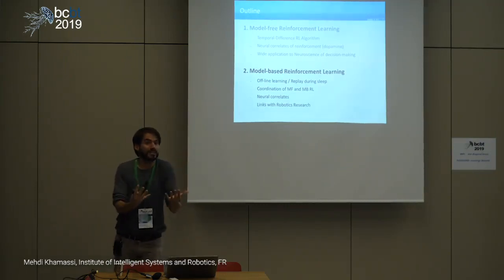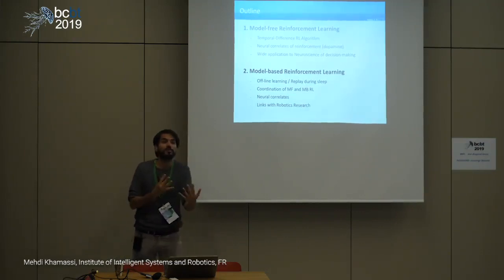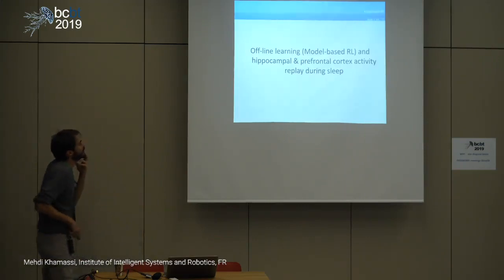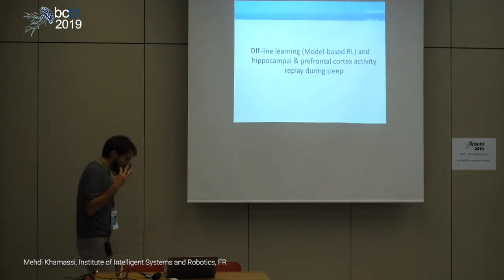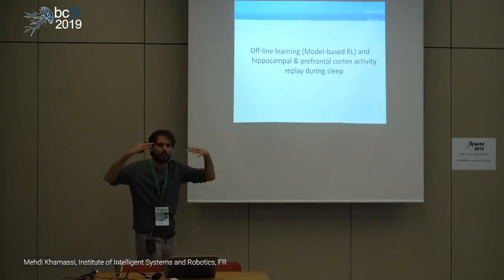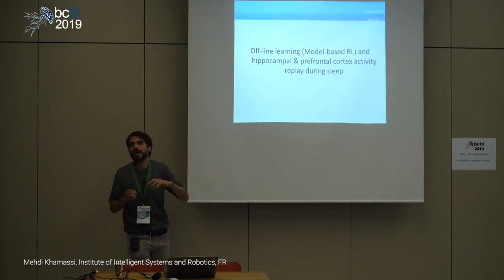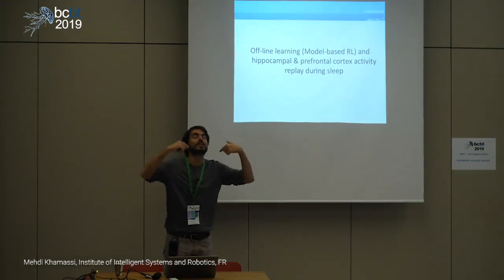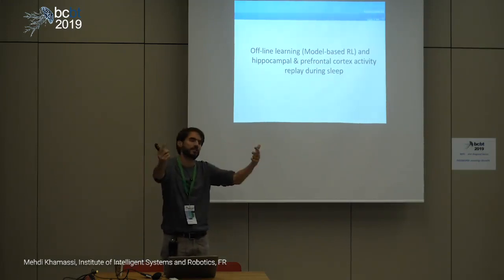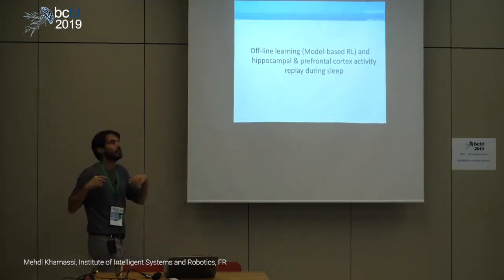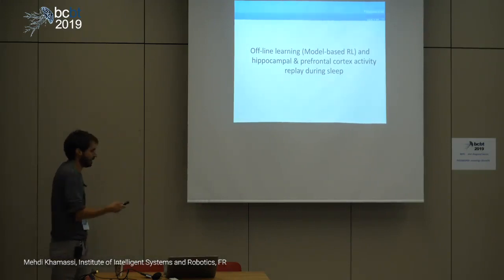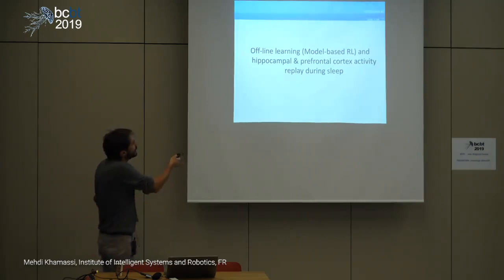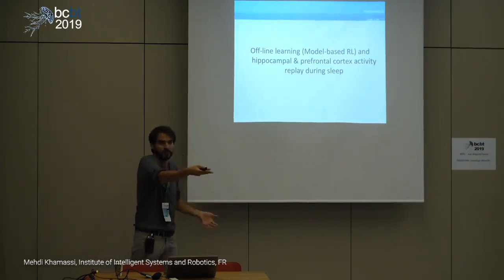When you build a model of the world — approximate and partial — you can close your eyes and think about what would happen if you were to take some actions. You can do some mental traveling and deduce things. You can bootstrap learning, and we think the hippocampus and prefrontal cortex contribute to that.